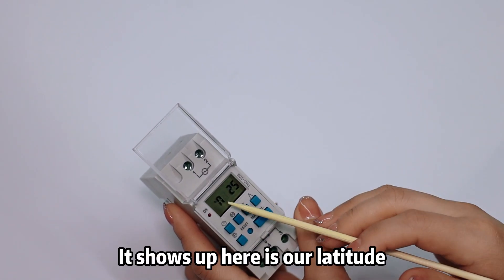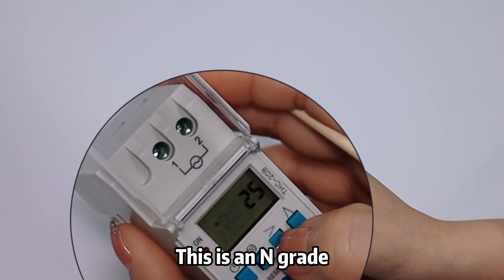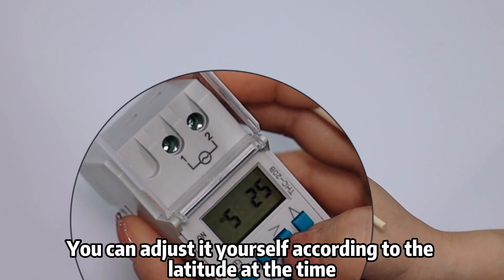After starting, it shows our latitude here, which is when adjustments can be made. This is an M grade, this is an S grade. You can adjust it yourself according to the latitude at the time.